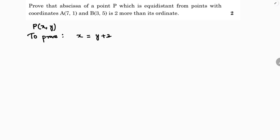Since the problem is based on equidistance, clearly given that P is x comma y, A is 7 comma 1, and B is 3 comma 5. Since P is equidistant from A and B, we have PA distance equals PB distance.